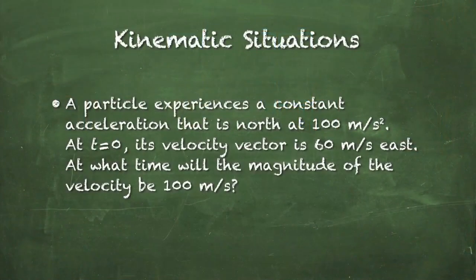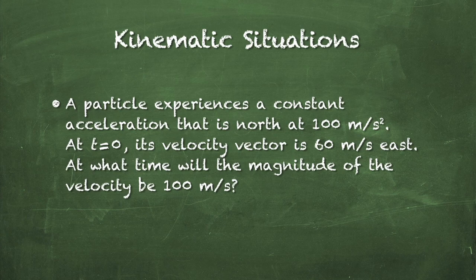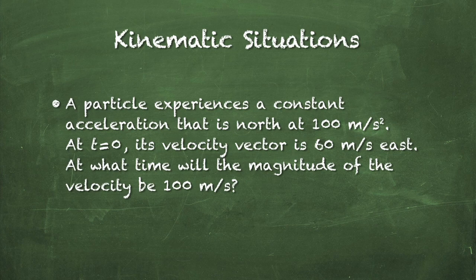Let's work another example. A particle experiences a constant acceleration that is north at 100 m/s². At t equals zero, its velocity vector is 60 m/s east. At what time will the magnitude of the velocity be 100 m/s? Think about that — draw your diagram, list your knowns and unknowns, and identify the type of situation.